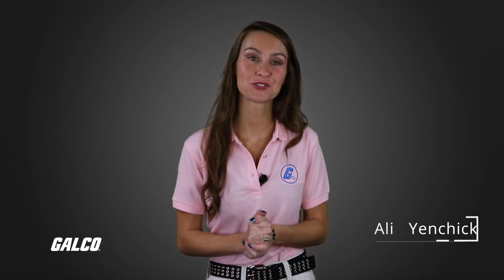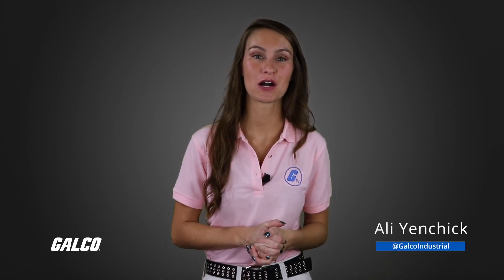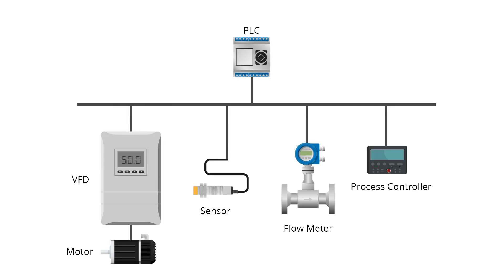Fieldbus is a group of industrial network protocols used in real-time distributed control systems. It allows multiple instruments to connect to one communication point at the same time, typically at the controller level. This eliminates the need for each device to have its own communication point with a controller, reducing the length and number of cables required in the network.